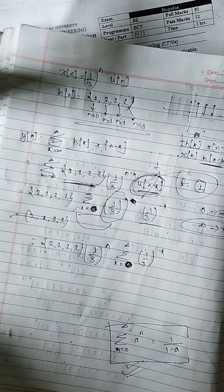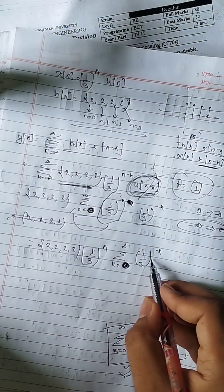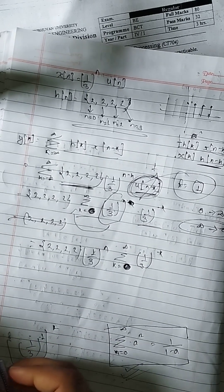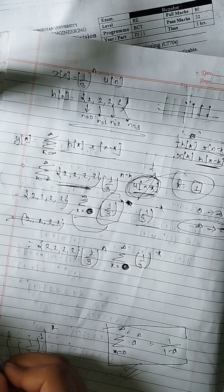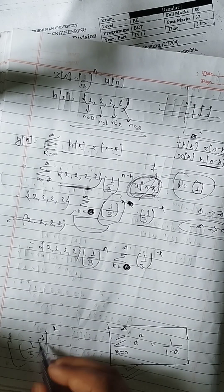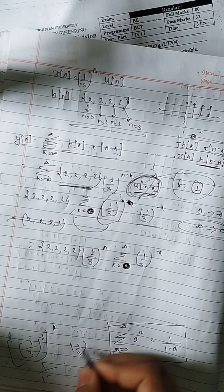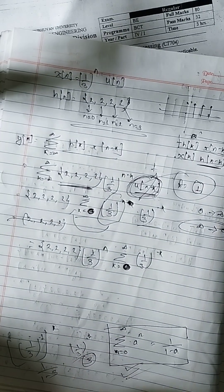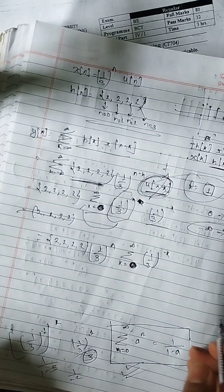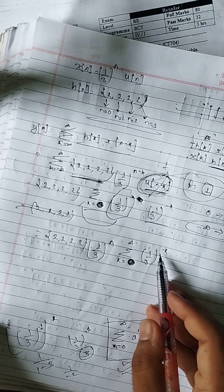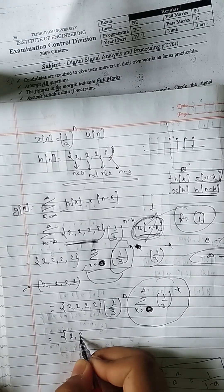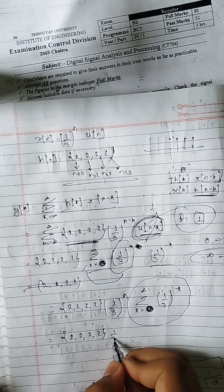This formula means (1/3)^(-1), which equals 3. The summation of k from 0 to infinity gives 1 upon (1 minus (1/3)^(-1)), which simplifies to 1 upon (1 minus 3), which equals 1 upon minus 2. So the result involves (1/3)^n times 1 upon minus 2.